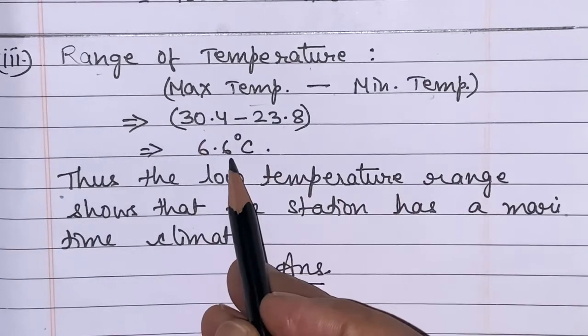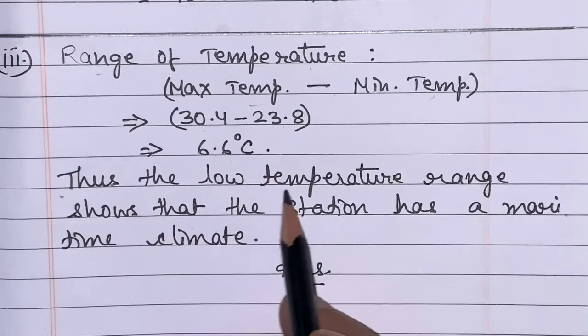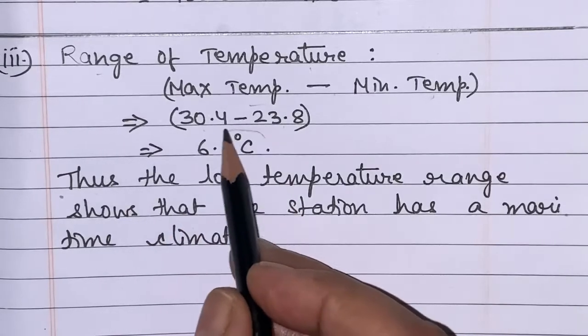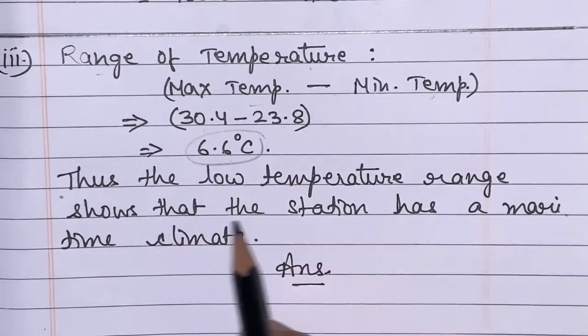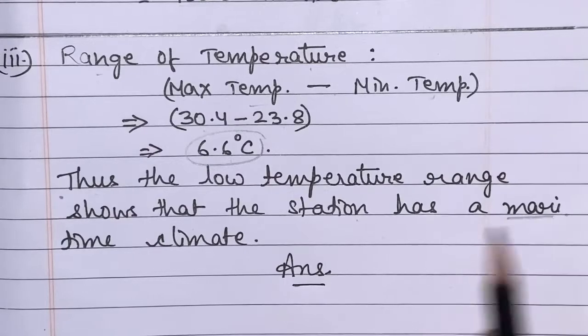And I got the answer 6.6 degrees Celsius, which is low temperature range, which shows that the station has a maritime climate.